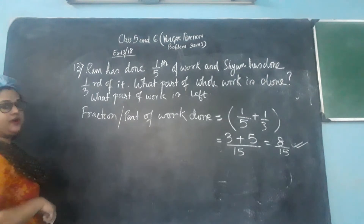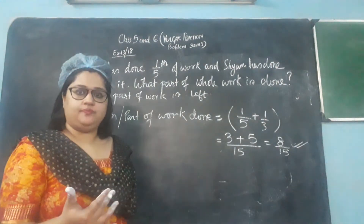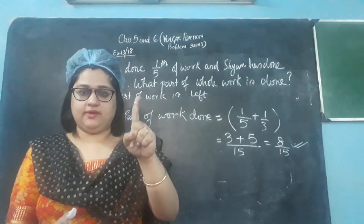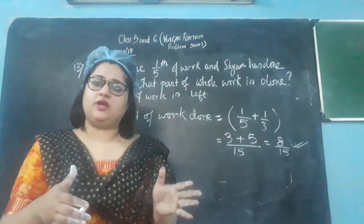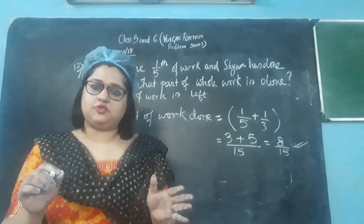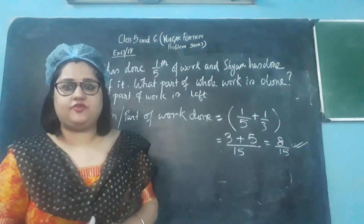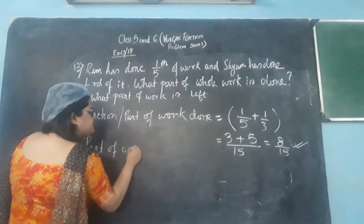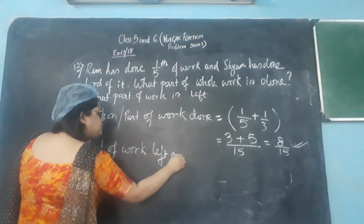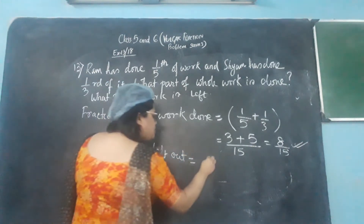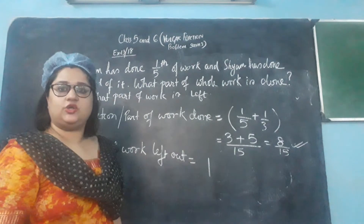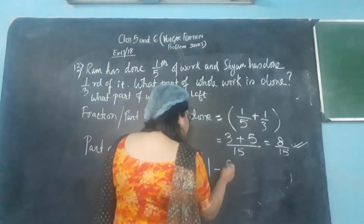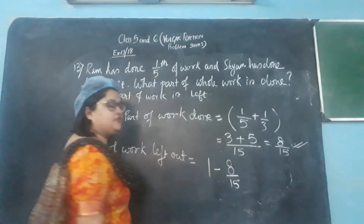The next question is: what part of work is left out? When you are doing work and it is not finished, the entire work is taken as 1. The part of work that is done has to be subtracted to know how much work is left out. So we write: part of work left out — that means still not done. If the entire work is taken as 1, the fraction total is always 1. From that, we subtract the fraction of work already done by both of them.